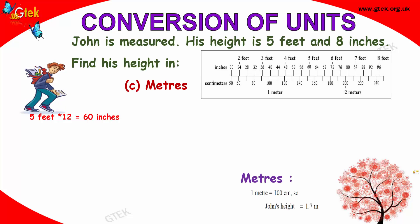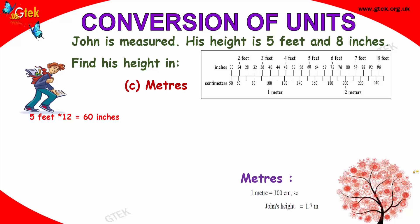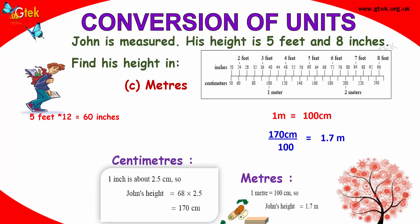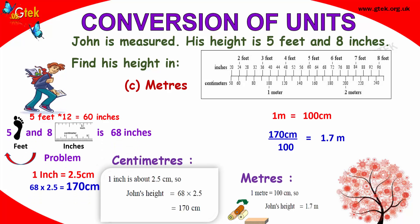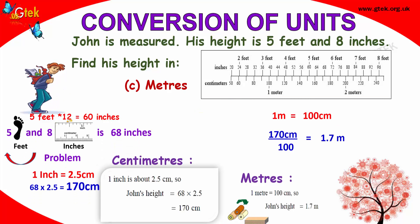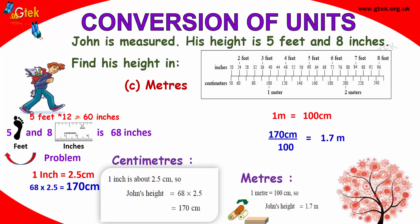John, as discussed before, his height is 5 feet and 8 inches. We need to convert into meters. How can we convert? Let's see. As you know, 5 feet — 1 foot is 12 inches — so 5 feet into 12, you get the inches. So 5 feet into 12 is 60 inches.